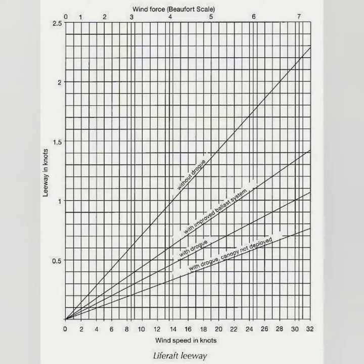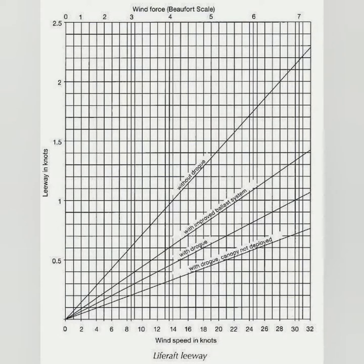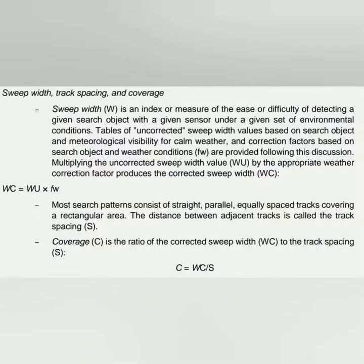If survivors are using a life raft, there is additional help provided in Chapter 12 called life raft leeway. Depending on what kind of life raft the survivors have — whether it is without drogue, with improved ballast system, with drogue, or with canopy not deployed — you will get different leeway values and can calculate datum 2 accordingly. There are also certain technical terms that a sailor must know.